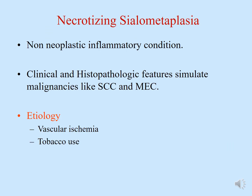Lastly, necrotizing sialometaplasia — though covered in the previous lecture by Dr. Larry — has an important histopathological aspect worth revisiting. It is a non-neoplastic inflammatory condition whose clinical and histopathological features simulate malignancies like squamous cell carcinoma and mucoepidermoid carcinoma. The etiology is vascular ischemia, associated with tobacco and smoking. Patients with smoking habits do present with these lesions, and the lesions can clinically as well as microscopically mimic squamous cell carcinoma or mucoepidermoid carcinoma, making diagnosis challenging.